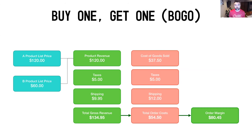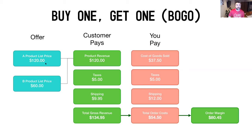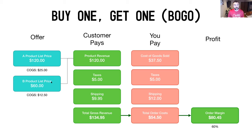Let's look at a BOGO — buy one get one. Here the list price is $120 for the first product. The second product could be at half the price ($60), the most expensive item in the cart, or even the same price. In this case we're offering a buy-one-get-one-free, assuming product B is worth half of product A.